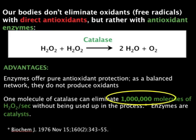When our bodies don't eliminate free radicals within the cell, we need an equation that will work. In the presence of catalase — an indirect antioxidant produced by your cells — when you have hydrogen peroxide within the environment of your cells, catalase neutralizes it into water and oxygen. It actually neutralizes these free radicals within the cell by an enzyme your body makes. Enzymes offer pure antioxidant protection as a balanced network and do not produce oxidants.